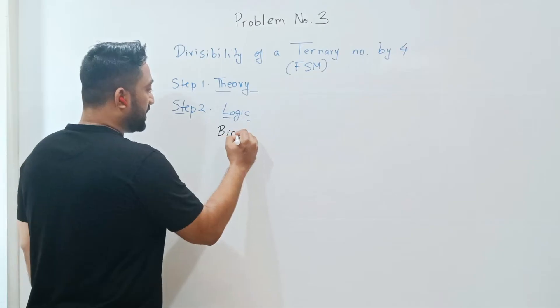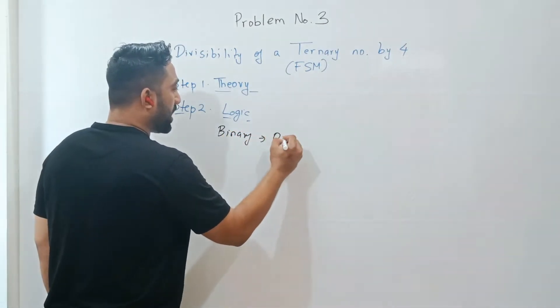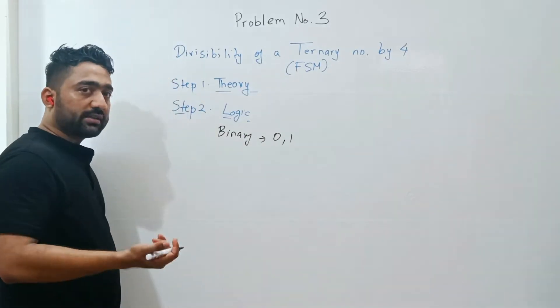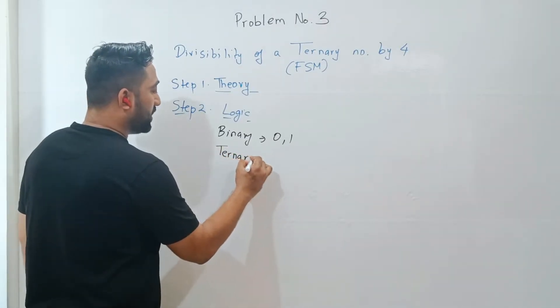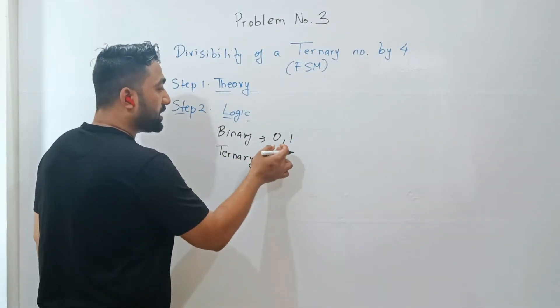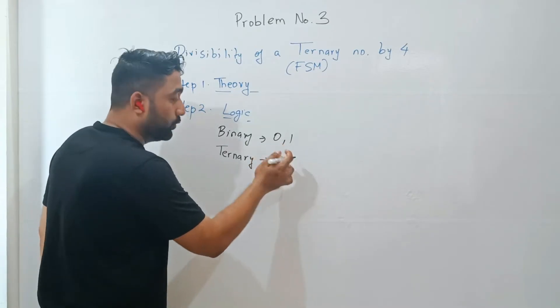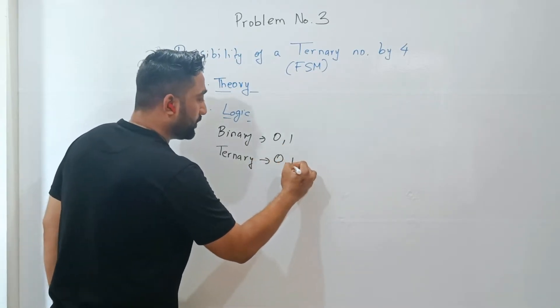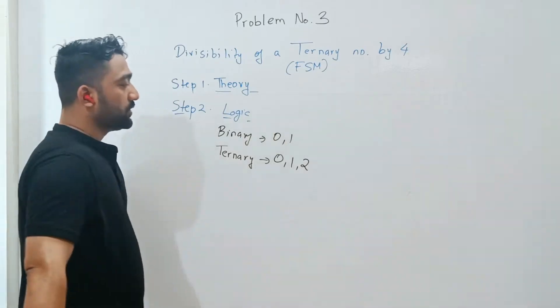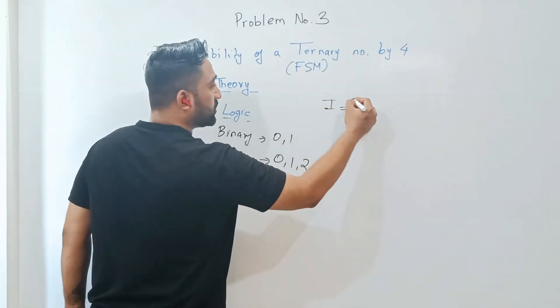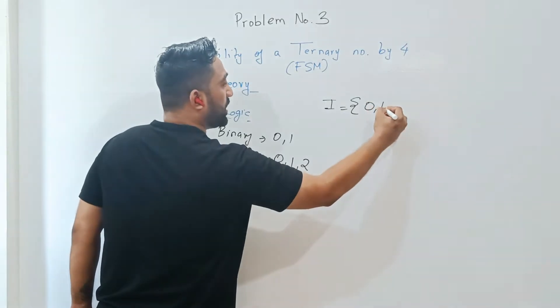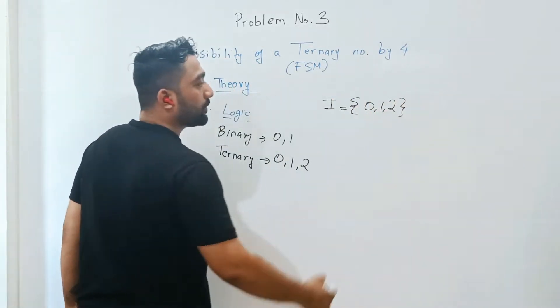Binary numbers we have seen in the past video - binary are nothing but 0 and 1. Ternary numbers are those numbers which have a base 3, as compared to binary whose base is 2. So ternary numbers are 0, 1, and 2. Obviously the inputs (the I part) are going to be 0, 1, and 2.